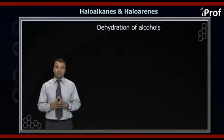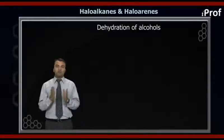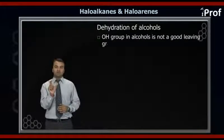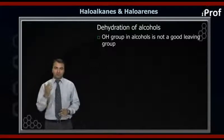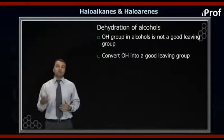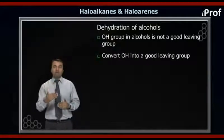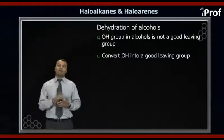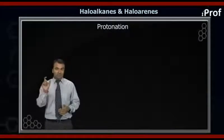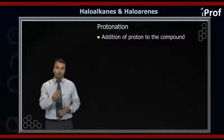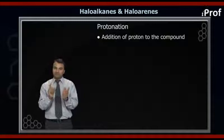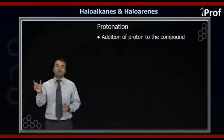In the dehydration of alcohol, we will be having an OH group. The OH group in the dehydration of alcohols is not a good leaving group. So our first job is to make this OH a good leaving group so that we can have an elimination mechanism. For that, what we do is first a protonation — that is, addition of a proton to the compound. In the dehydration of alcohols, in the first step, we add acid.